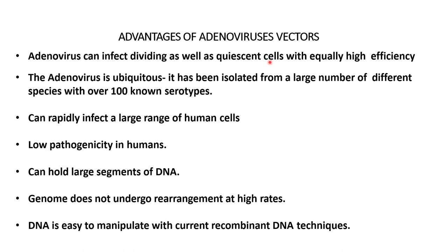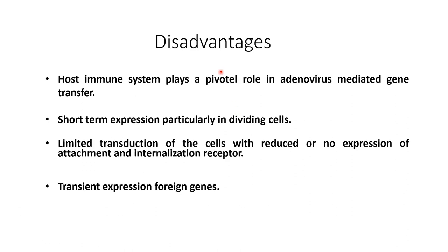Advantages of adenovirus: it can infect dividing as well as quiescent cells with equally high efficiency. Adenovirus is ubiquitous — isolated from a large number of different species with over 100 known serotypes. It can rapidly infect a large range of human cells, has low pathogenicity in humans, can hold large segments of DNA, and the genome does not undergo rearrangement at a high rate. DNA is easily manipulated with current recombinant DNA techniques.